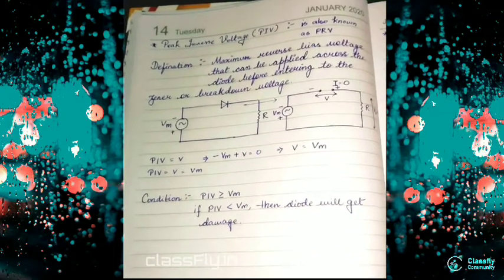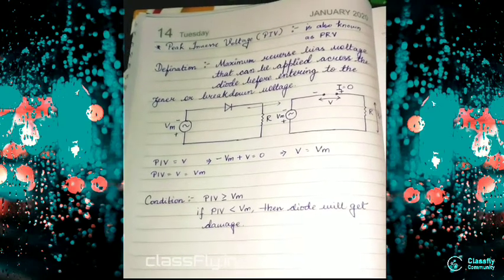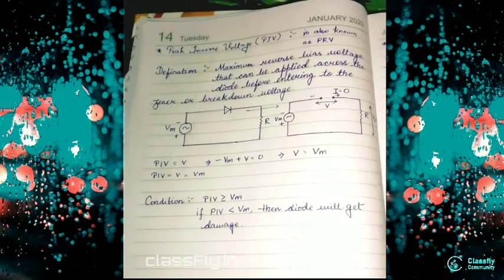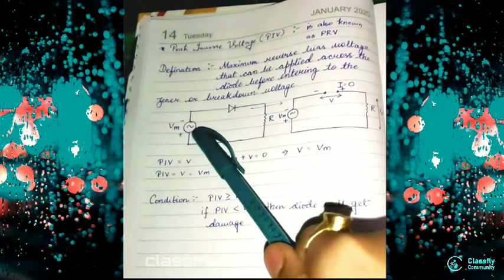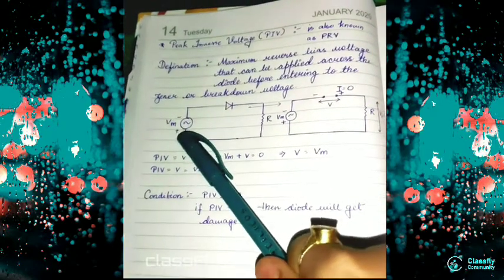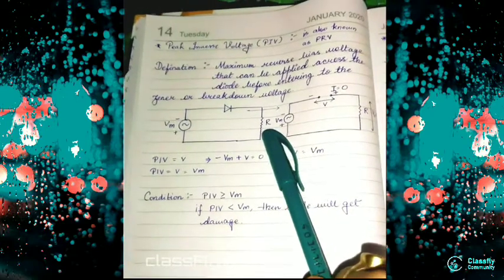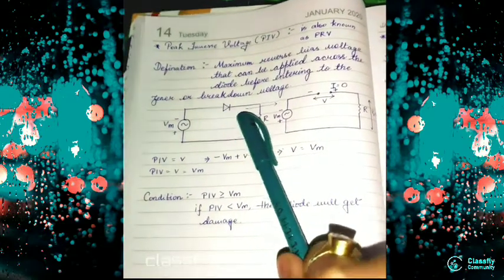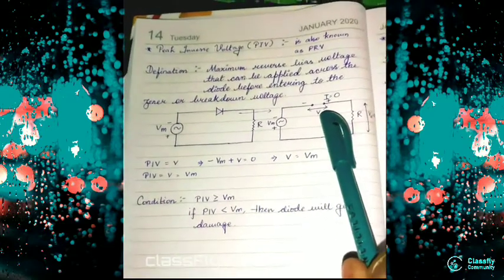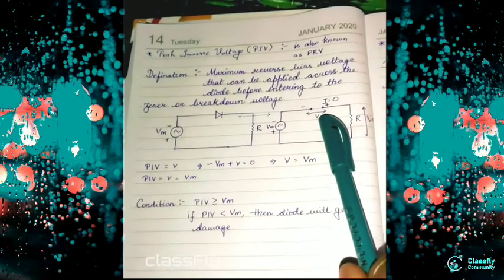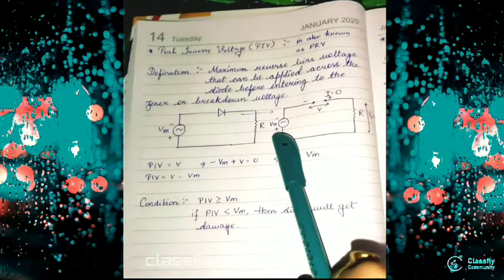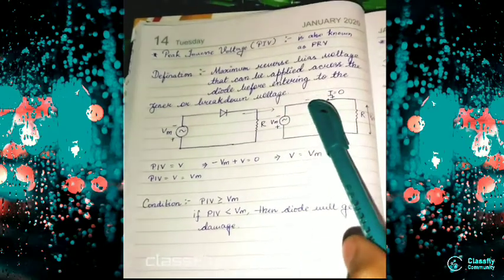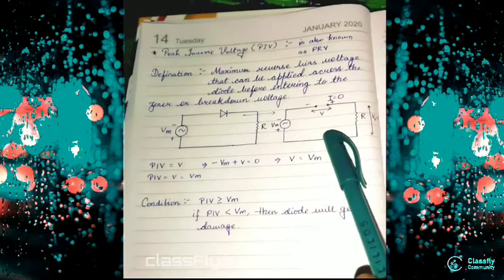When we get Zener or breakdown voltage in the reverse bias of the diode. Here we have a circuit with a diode, voltage V_m, and a resistor. We will change this diode to an open circuit. This is the equivalent circuit, where voltage moves from positive to negative.